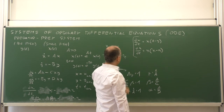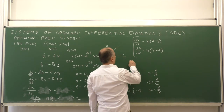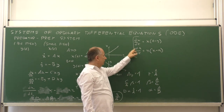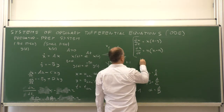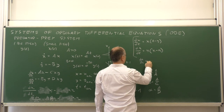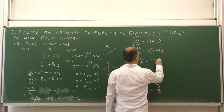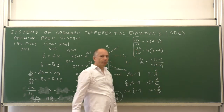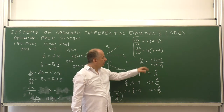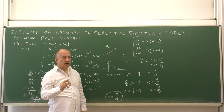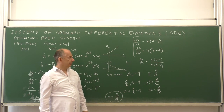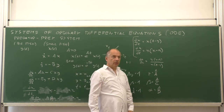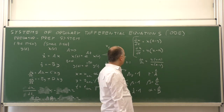We cannot solve the system as we could for linear differential equations, but we can still come to some useful conclusions. If we divide the second equation by the first, then dt cancels and we arrive at dy/dx = y(x - a) / (x(1 - y)). We can look at this as an equation for the unknown function y as a function of x, and this can be rewritten.